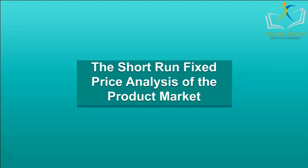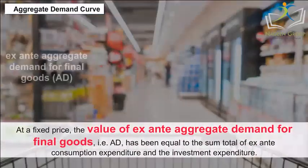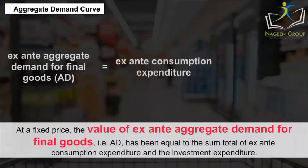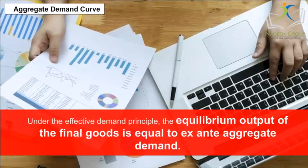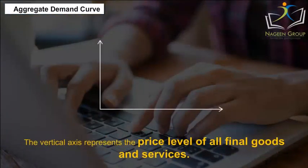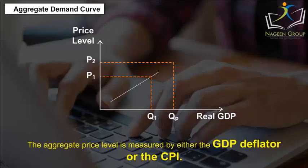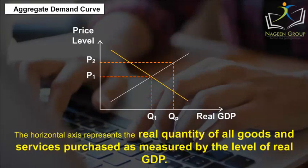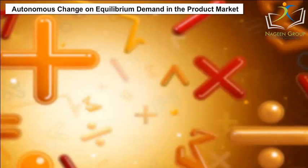The short-run fixed price analysis of the product market — Aggregate demand curve: At a fixed price, the value of ex-ante aggregate demand for final goods (AD) equals the sum of total ex-ante consumption expenditure and investment expenditure. Under the effective demand principle, the equilibrium output of final goods is equal to ex-ante aggregate demand. The vertical axis represents the price level of all final goods and services, measured by either the GDP deflator or the CPI. The horizontal axis represents the real quantity of all goods and services purchased, as measured by real GDP.